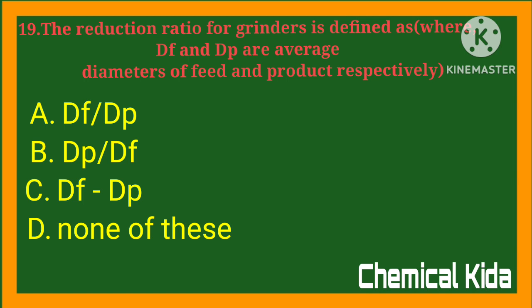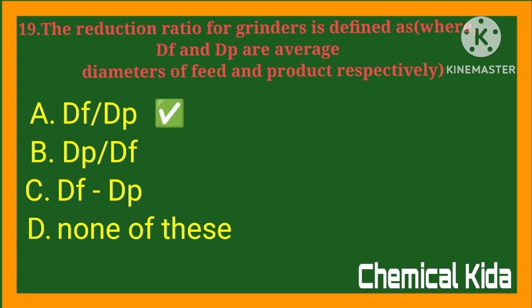The reduction ratio of a grinder is defined as the ratio of average diameter of feed (Df) to average diameter of product (Dp). Options: a) Df/Dp, b) Dp/Df, c) Df minus Dp, d) none of these. Answer: a) Df/Dp.